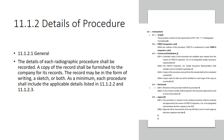Section 11.121 General: the details of each radiographic procedure shall be recorded — you've got to have a written procedure. A copy of the record shall be furnished to the company for its records. Records may be in the form of writing, a sketch, or both. As a minimum, each procedure shall include the applicable details listed in sections 11.122 and 11.123.